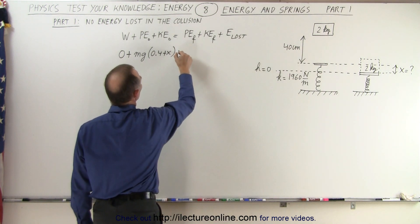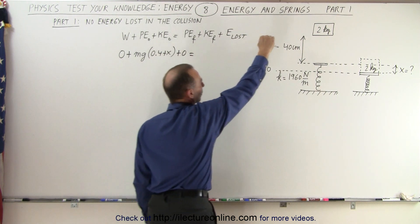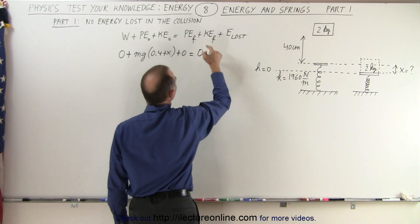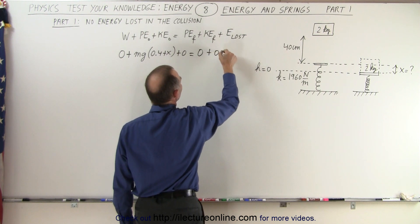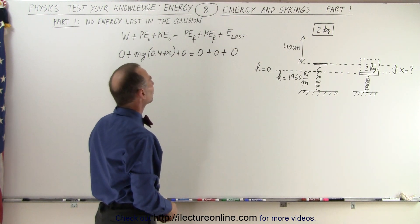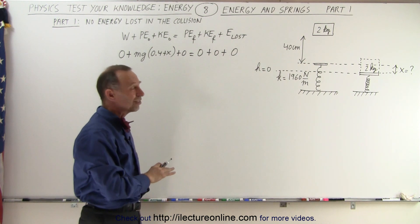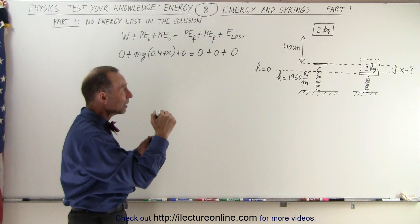The initial kinetic energy will be zero because it's motionless at the very beginning. And at the end, the potential energy will be zero, the kinetic energy will be zero, and the energy lost will be zero. And that means we have a problem because it turns out potential energy is not zero. It's not just the height that we lost.